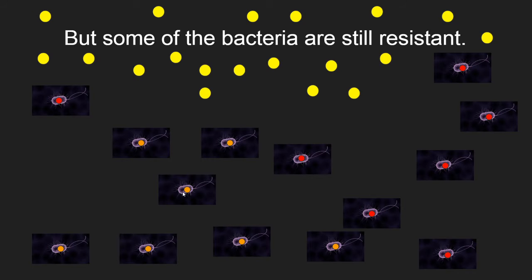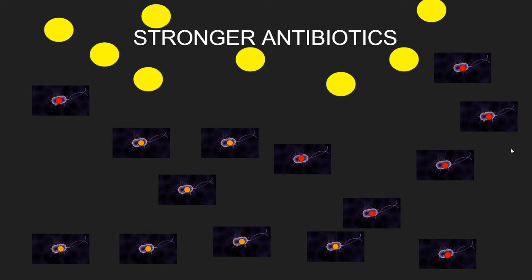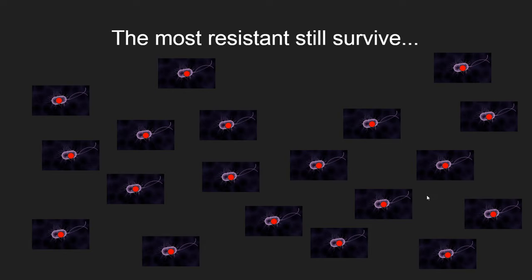Now our survivors are going to be the orange and the red. You take even stronger antibiotics — you started with penicillin, went up to ampicillin, and now you've got to go on to something like tetrachloride, much, much stronger. That kills the orange but leaves the red. When the red reproduce, we now have a bacteria that is resistant to all three of those antibiotics that have already been used on it.